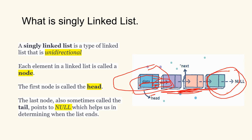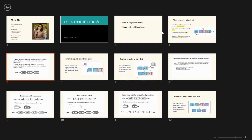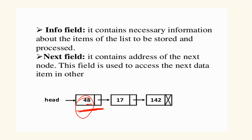Going to the first node gives you the address of the second node; you access the data there, then get the address of the third element, and so on until the end of the list. At the last node, the address field contains null, indicating you've reached the tail — the end of your linked list. So each node contains a data part and a pointer part, where the pointer is simply a reference to the next node, and the last node's pointer is null.